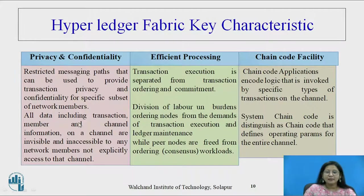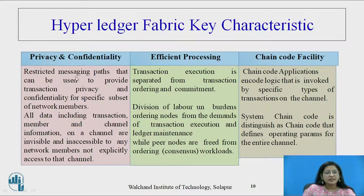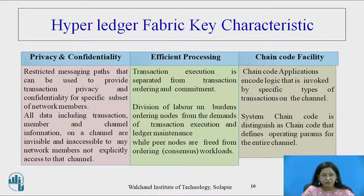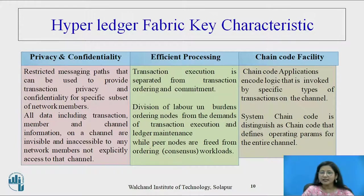The characteristics of Hyperledger Fabric include privacy and confidentiality, and efficient processing and chaincode facility. For privacy and confidentiality: restricted messaging paths can be used to provide transaction privacy and confidentiality for a specific subset of network members. All data including transaction, member, and channel information on a channel are invisible and inaccessible to any network member that does not explicitly have access to that channel. For efficient processing: transaction execution is separated from transaction ordering and commitment. This division of labor unburdens ordering nodes from the demands of transaction execution and ledger maintenance, while peer nodes are freed from ordering workloads.